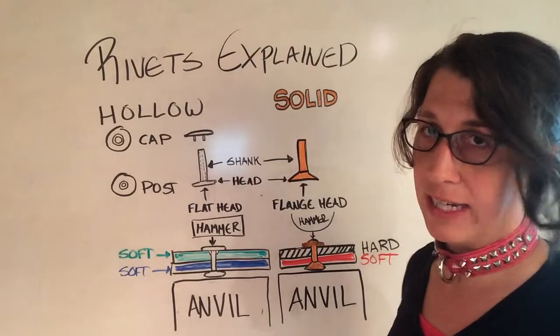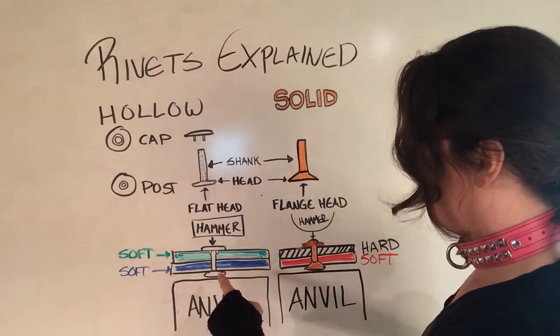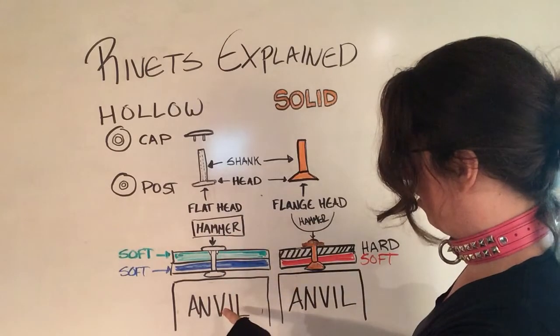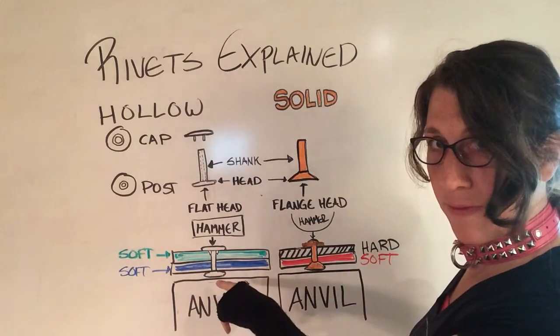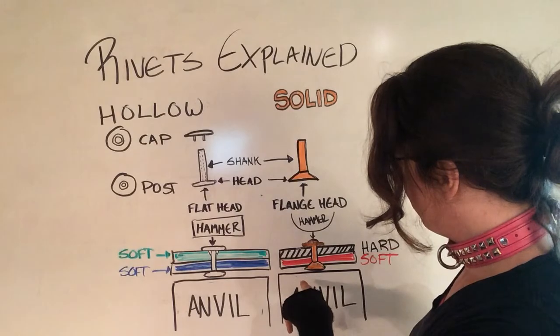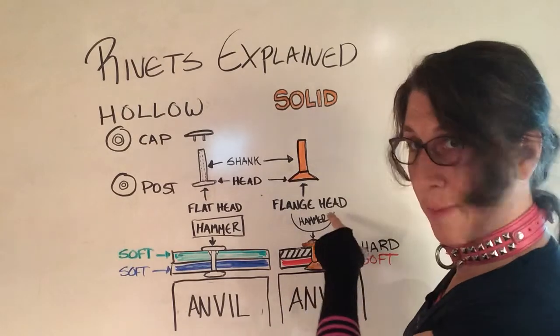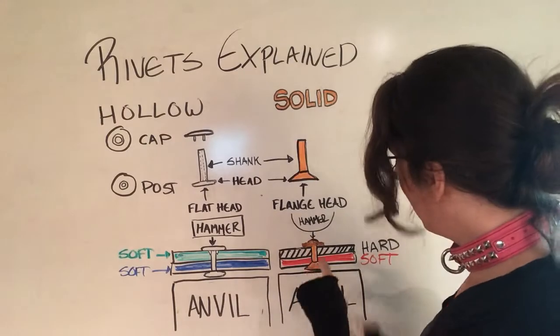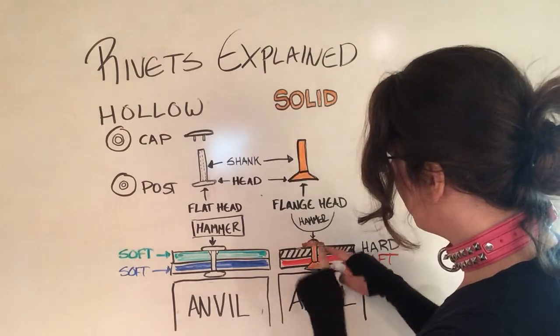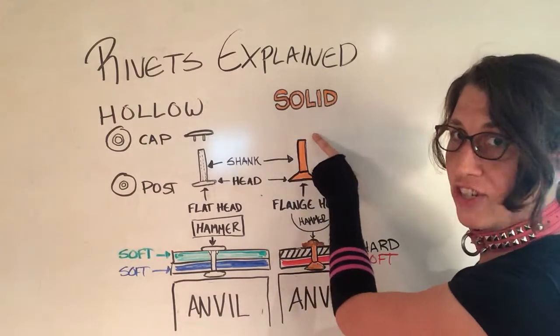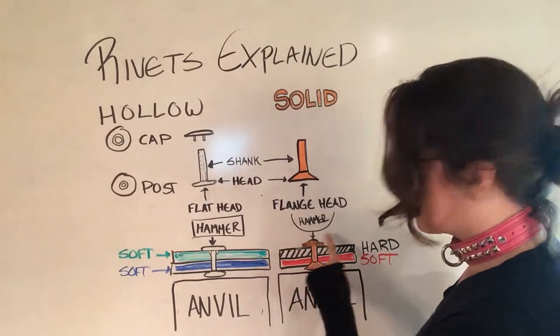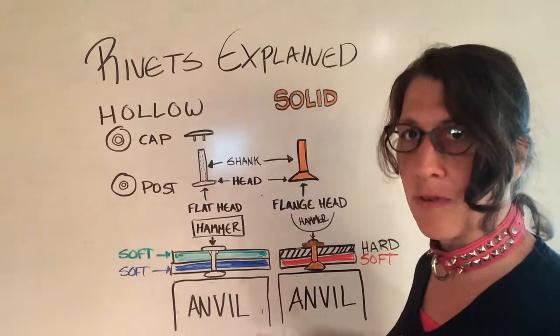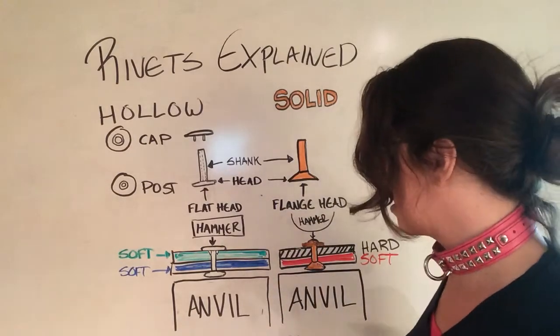So ultimately, all you need to know is you have a hammer, you have an anvil, and you're going to hit. And for the solid one, you have a hammer and an anvil, and you're going to hit, but you're going to make sure that that rivet head shape changes from this straight shank to a wider surface. And that's going to give you all the structure you need for your rivets to hold together.